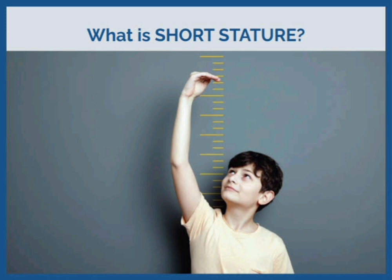Tall stature differentials: overgrowth syndromes like Klinefelter syndrome, Marfan syndrome, homocystinuria. Growth hormone excess, CNS tumor, hyperthyroidism, constitutional advance, and familial tall stature. In exams, short stature cases commonly include constitutional delay, Turner syndrome, and Russell-Silver syndrome.